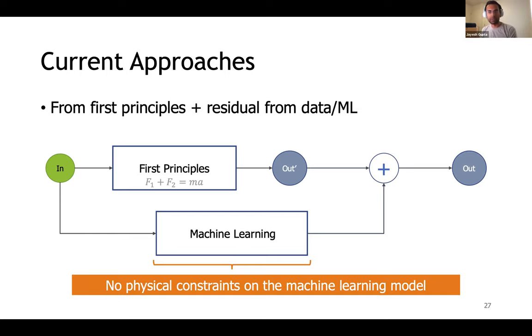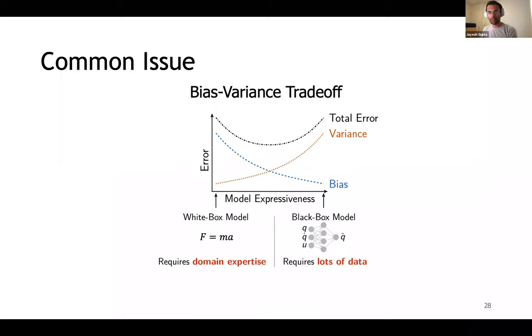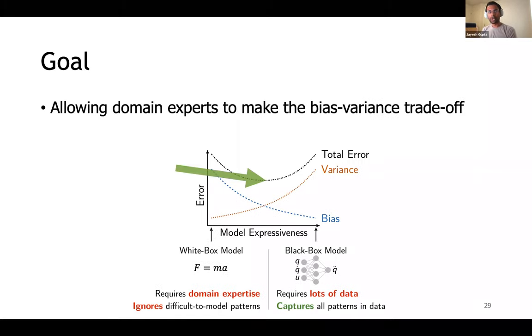Note, however, there's usually no physical constraints on the machine learning model pertaining to the domain. For example, a mechanical system should be following the principles of conservation of energy, and it would be great if our machine learning model kept track of such things. When it comes to any machine learning based approach to modeling a system, one has to deal with the standard bias-variance tradeoff. Simpler white box models with fewer parameters to learn often bias the model by ignoring difficult patterns. More expressive black box models like neural networks can require a large amount of data to capture all the relevant patterns, and therefore when there's limited data, can show high variance due to overfitting.